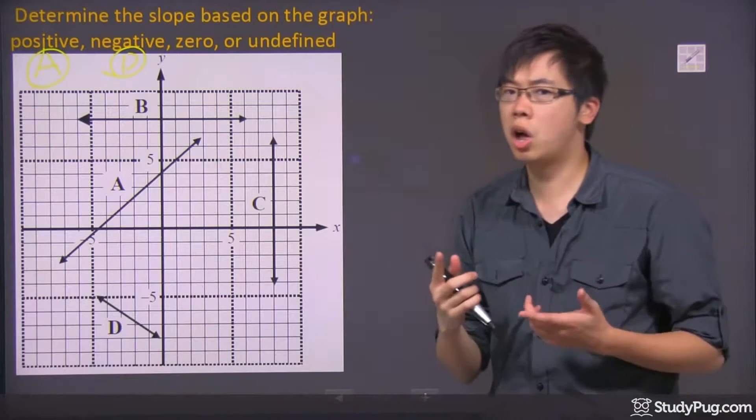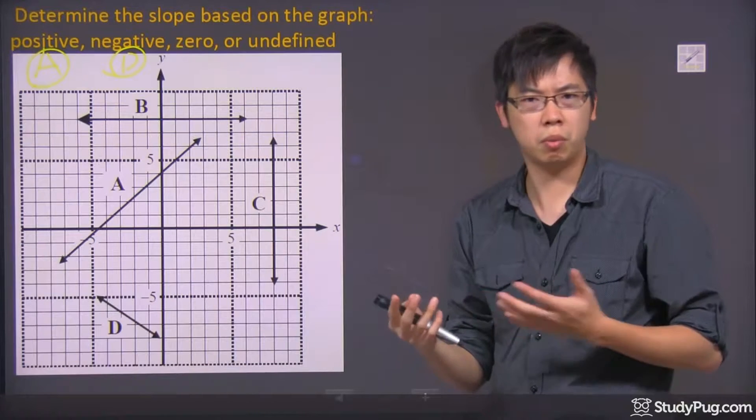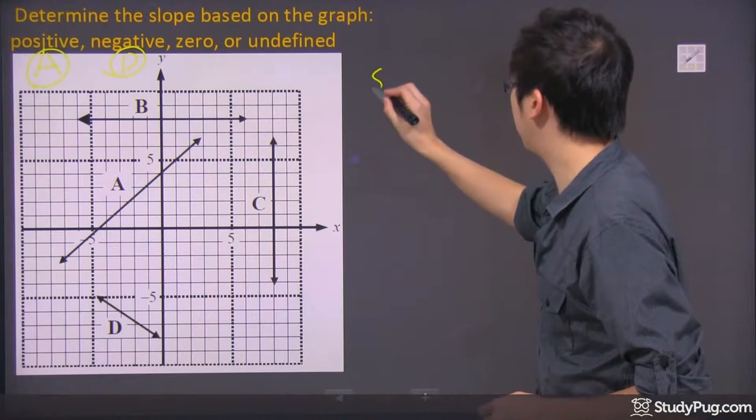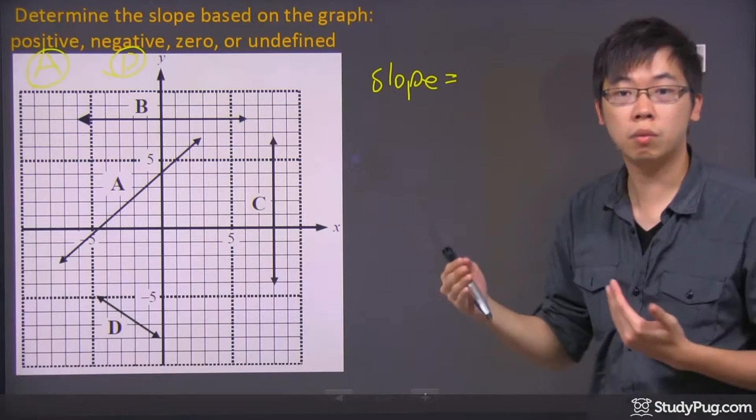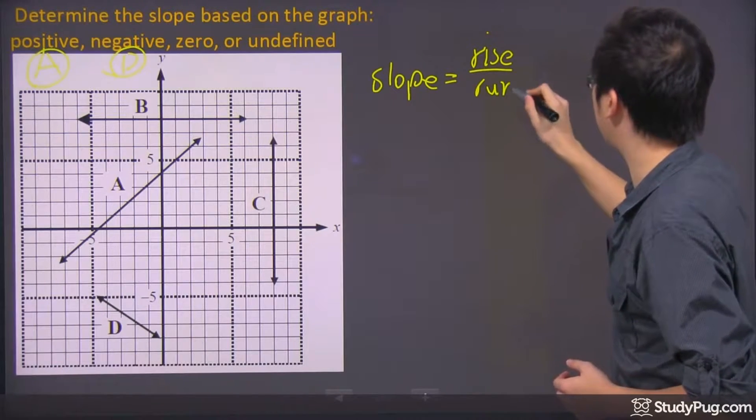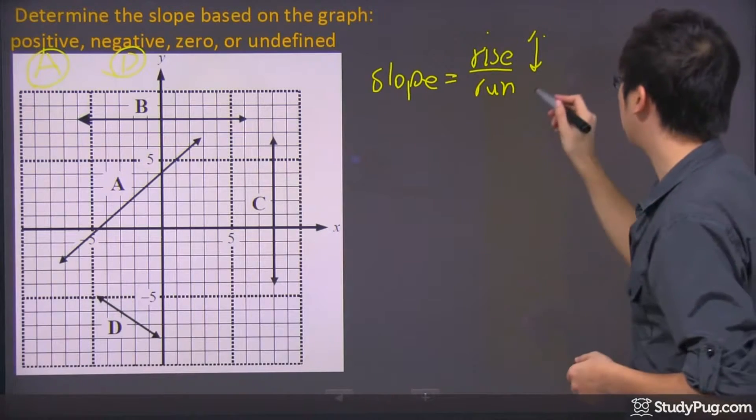Now what about a zero and undefined? Well it's kind of hard to think about zero slope. What is a zero slope? Well we know that a slope, we can actually do a little bit of work on the side. The slope is basically rise over run, right? So we got the rise and we got the run over here. The rise looks at the up and down and the run looks at the left and right.